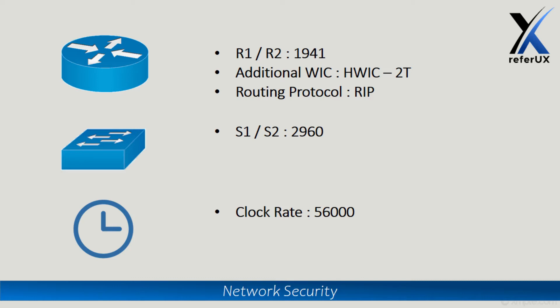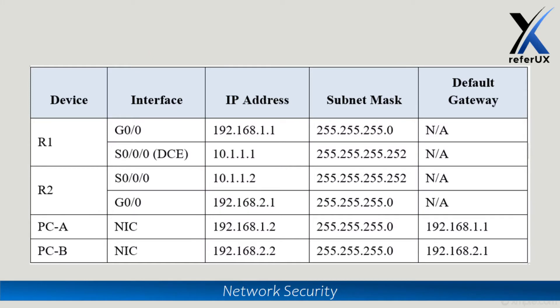For the switches, the respective hostnames would be S1 and S2, and the switch model will be 2960. For the serial interfaces, on the DCE — data communicating equipment — device, the clock rate we are planning to set is 56,000 bps.